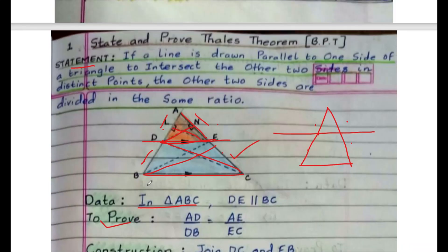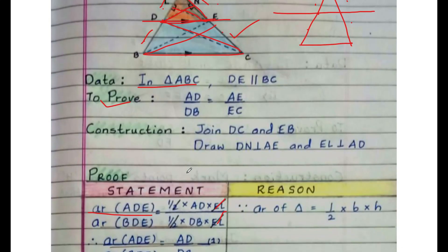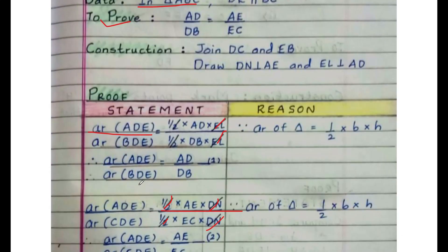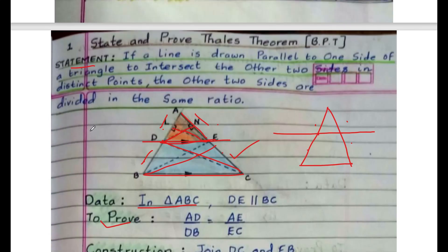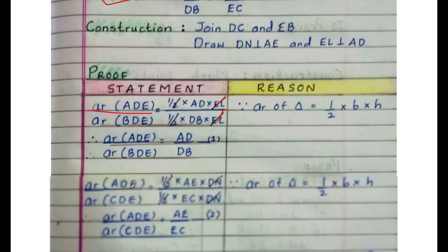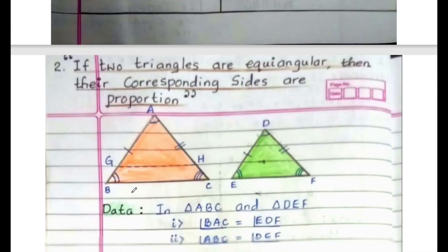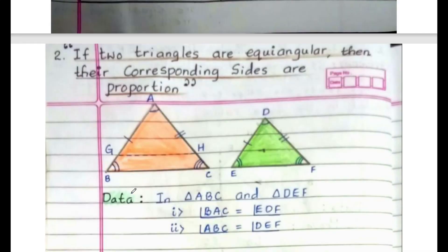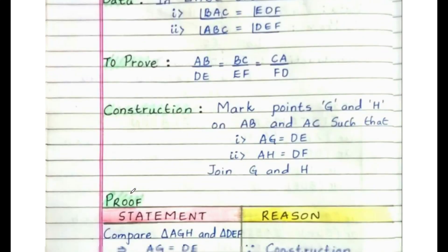So first draw the figure, then write data, to prove, construction, then the proof part. If you write it with the statement, you will get 5 marks. Next, the AA criteria — you can go through that theorem once.